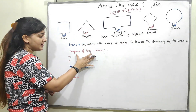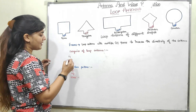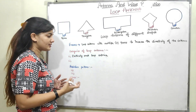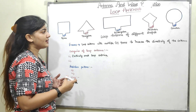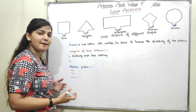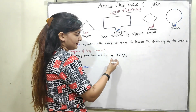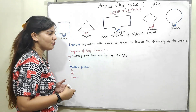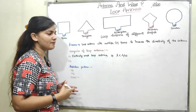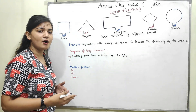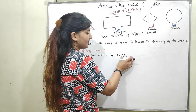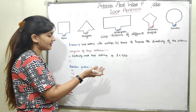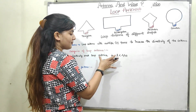Now we will move on to the categories of loop antenna. We have two categories. The first is the electrically small loop antenna — if the length of the radiating coil is less than lambda by 10, it is called an electrically small loop antenna. Since antennas generally work on megahertz frequencies, lambda is really small, so this length is even smaller than lambda.